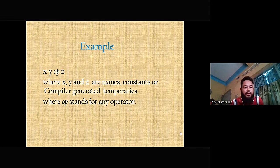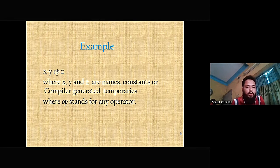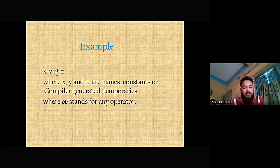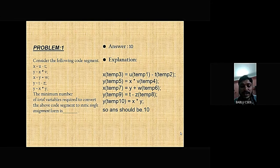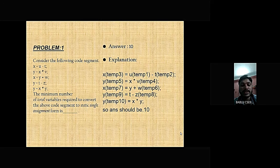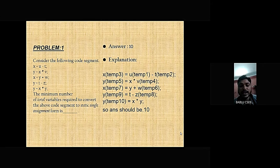Here is an example of three-address code: x = y op z, where x, y, and z are names, constants, or compiler-generated temporaries. Consider the following code segment: x = u minus t; y = x into k; x = y plus w; y = t minus z; y = x into y. The question is: what is the minimum number of total variables required to convert the above code segment to static single assignment form?